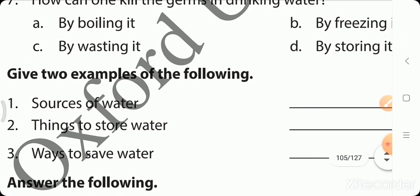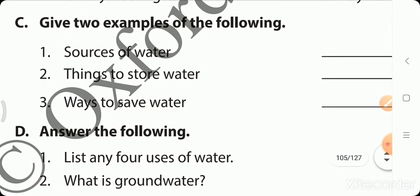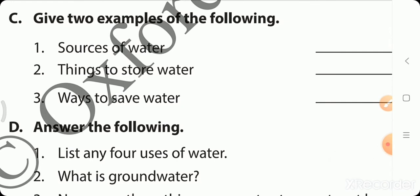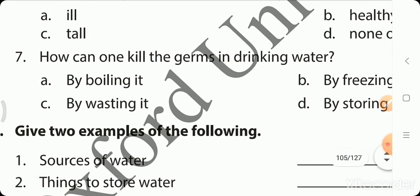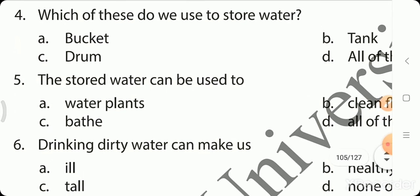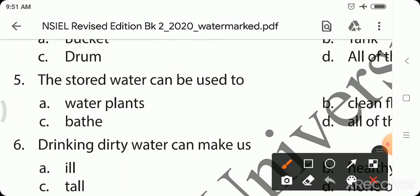Okay students, next exercise. Give two examples of the following. Sources of water. Which are sources of water? Give two names. River, ponds. You can say anything. River, ponds, lake, well, rain. Main source, you can say any two. Things to store water. We just saw in the MCQ. How do we store water? There were three items there. Bucket, tank, drum. You can say any two of these.